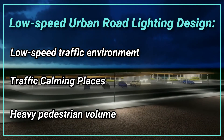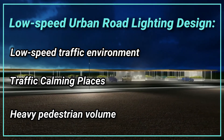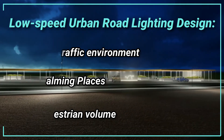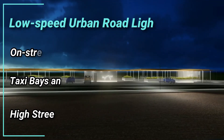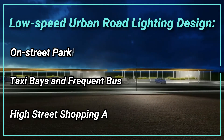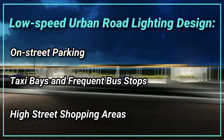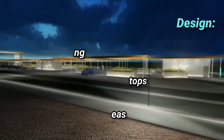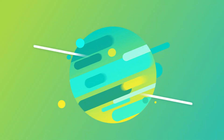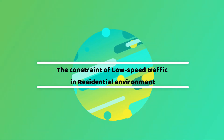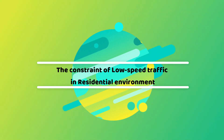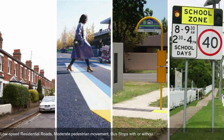Constraints for low-speed urban road lighting design include: low-speed traffic environment, traffic calming measures, heavy pedestrian volume, on-street parking, taxi bays, frequent bus stops, and high-street shopping areas. For low-speed residential environments, constraints include moderate pedestrian movement, bus stops with or without bays, and school zones with traffic measures.